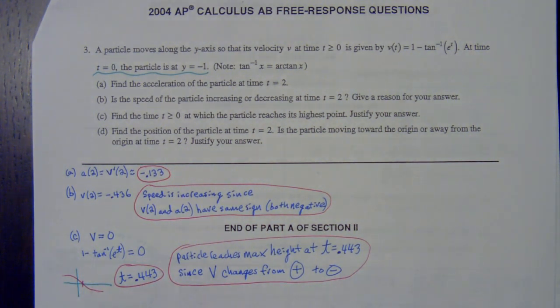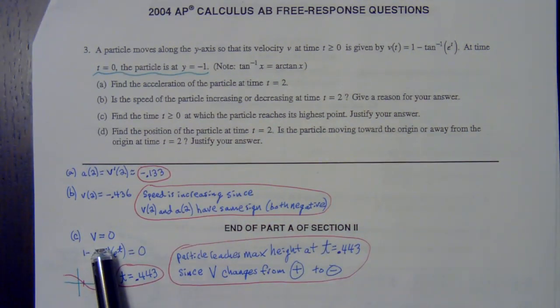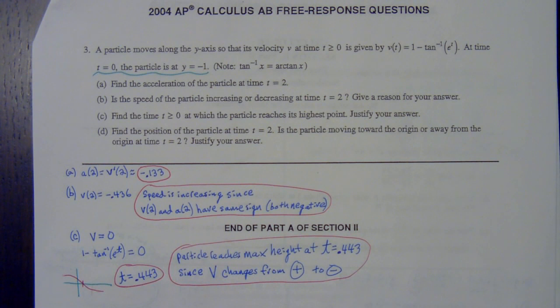When you reach the highest point, the first thing you want to jot down is where is the velocity equal to zero. When I double-checked the rubric, even if you did nothing else but just put v equals zero, they awarded a point just for that. You should never leave anything blank on these things. Even if you're not sure how to do the calculations, you could get a point just putting down the velocity is equal to zero.